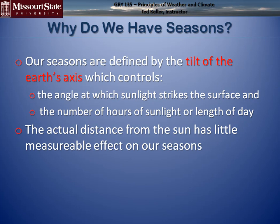The Earth's seasons have nothing to do with the distance from the Earth to the Sun. There's about a 3.3% variance in intensity — not enough to account for the seasons. It's all about the tilt of the Earth's axis, which controls the angle of sunlight and the number of hours of sunlight, or length of day.